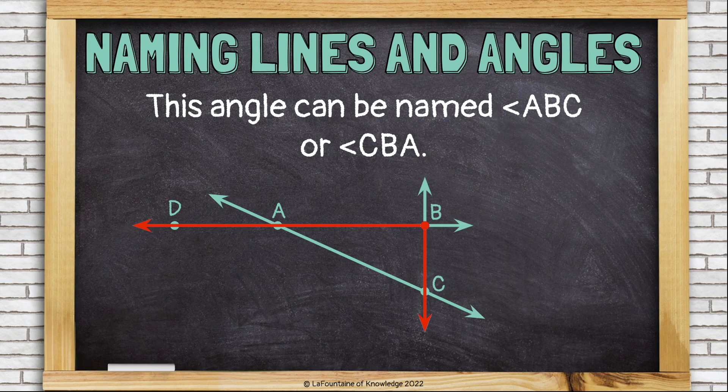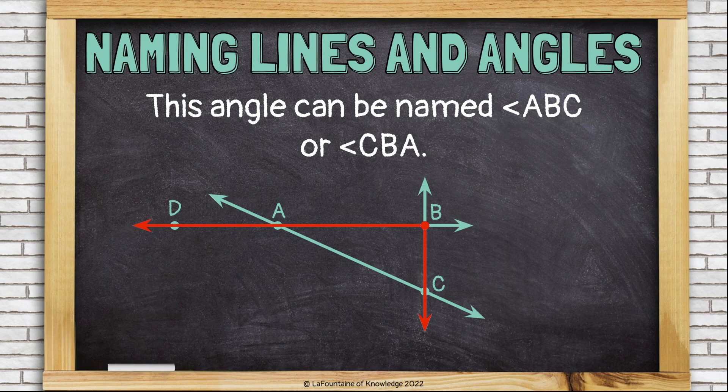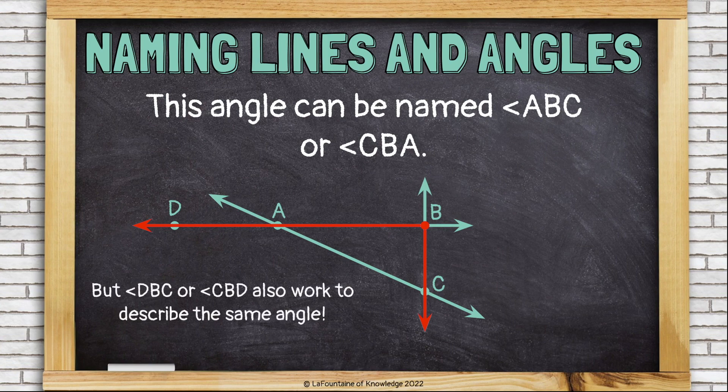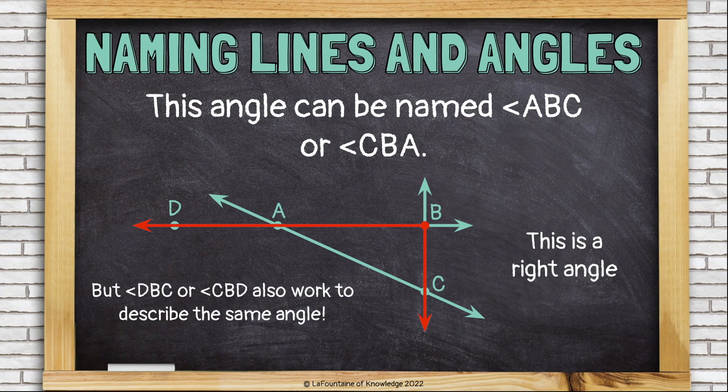This angle can be named angle ABC or CBA. It could even be named DBC or CBD because it also runs through the point labeled D. This is a right angle.